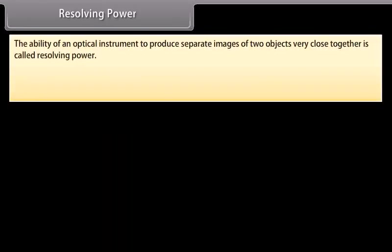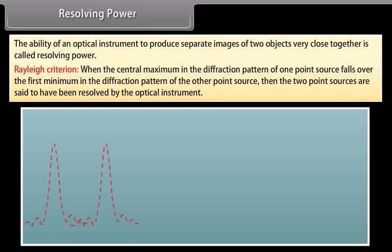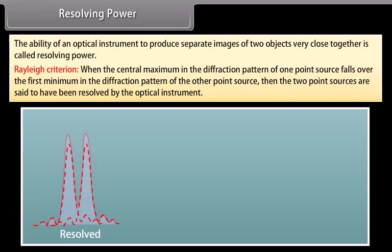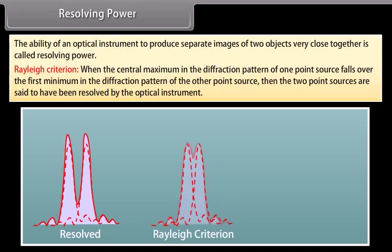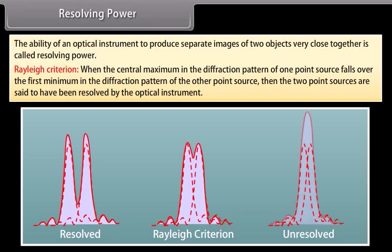The ability of an optical instrument to produce separate images of two objects very close together is called resolving power. According to Rayleigh's Criteria, when the central maximum in the diffraction pattern of one point source falls over the first minimum in the diffraction pattern of the other point source, the two point sources are said to have been resolved by the optical instrument.